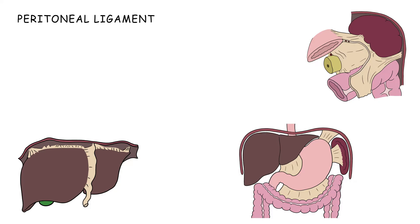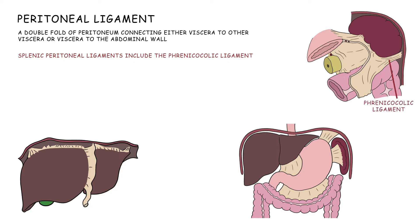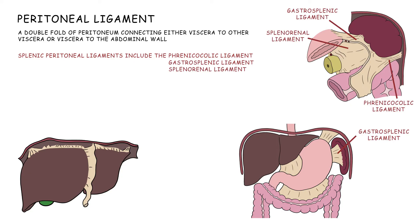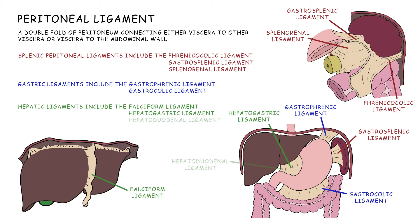A peritoneal ligament is a double fold of peritoneum connecting either viscera to other viscera, or connecting viscera to the abdominal wall. Splenic peritoneal ligaments include the phrenicocolic, gastrosplenic, and splenorenal ligaments. Gastric ligaments include the gastrophrenic and gastrocolic ligaments, and hepatic ligaments include the falciform, hepatogastric, and hepatoduodenal ligaments.